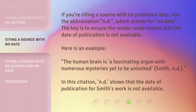If you're citing a source with no published date, use the abbreviation 'n.d.', which stands for 'no date.' The key is to ensure the reader understands that the date of publication is not available. Here is an example: 'The human brain is a fascinating organ with numerous mysteries yet to be unlocked' (Smith, n.d.). In this citation, 'n.d.' shows that the date of publication for Smith's work is not available.